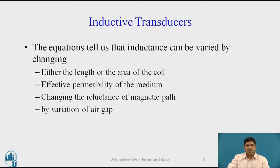This tells us that the inductance can be varied by changing either the length or the area of the coil, by the effective permeability of the medium which is μ, by changing the reluctance of the magnetic path, and by variation of the air gap. These are the different ways by which one of these features can be altered in order to vary the inductance, which we can then measure.